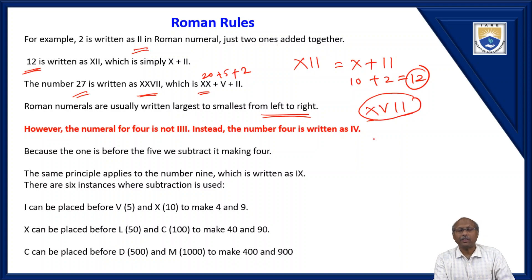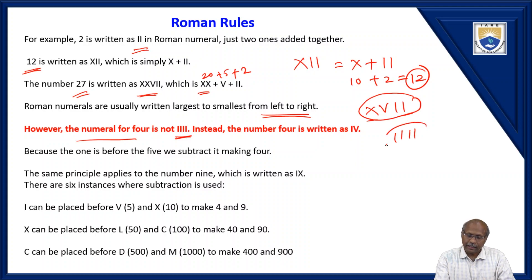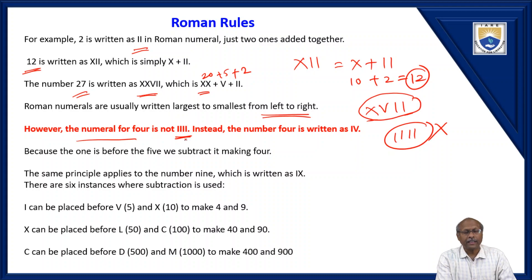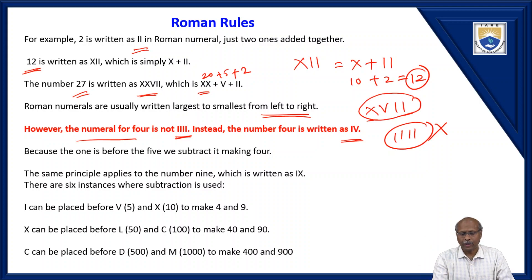If you want to write Roman numbers, you have to follow these rules. However, the Roman numeral for 4 is not written as four I's. That is wrong because maximum 3 symbols can be used continuously. Whenever the 4th one comes, you have to convert into another form. So 4 is written as IV — before the fifth symbol, subtract the previous one, so you get 4.